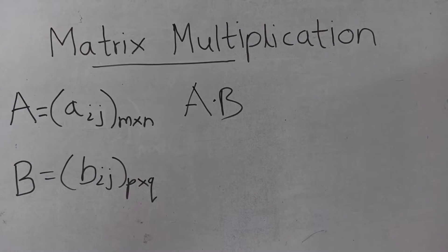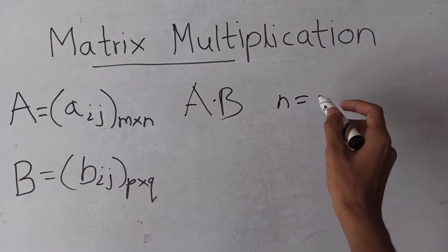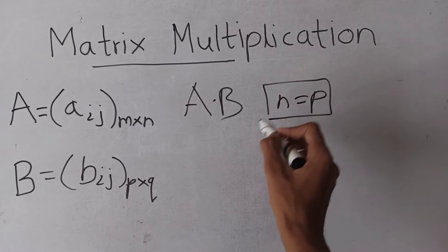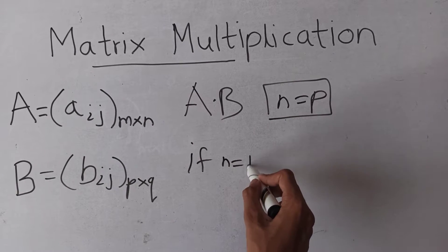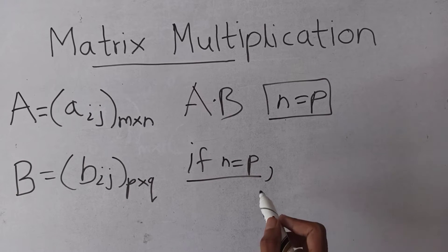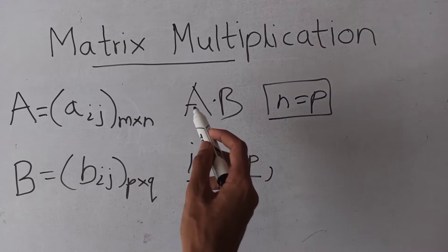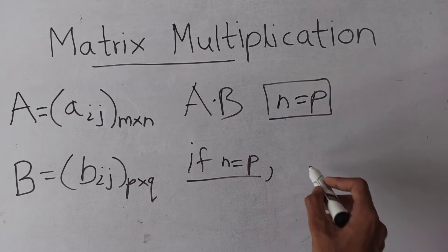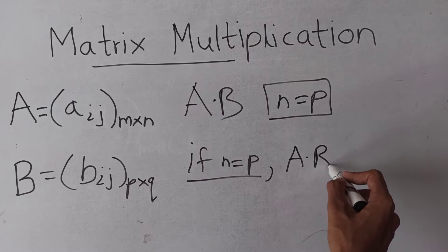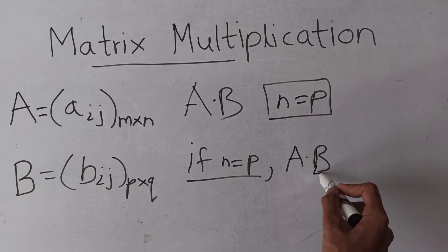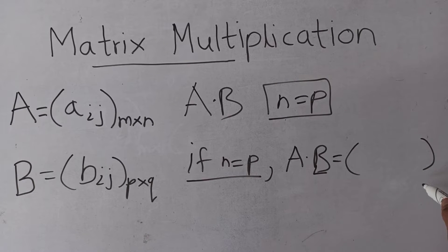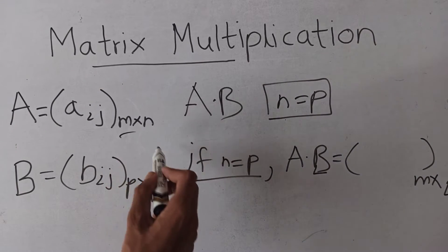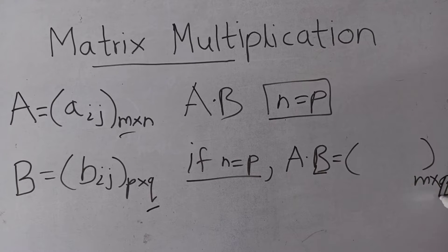If n equals p, then we can multiply A and B. We define the multiplication of A and B as another matrix of order m and q.